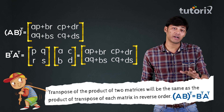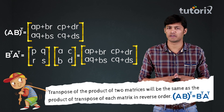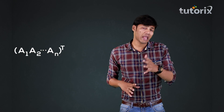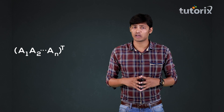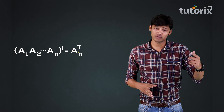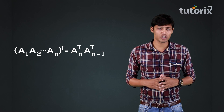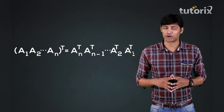The same property can be extended to any number of matrices. That is, the transpose of the product A1, A2, and so on up to AN, where A1, A2, and so on AN are matrices, will be the same as AN transpose multiplied by AN-1 transpose, and so on, down to A2 transpose multiplied by A1 transpose.